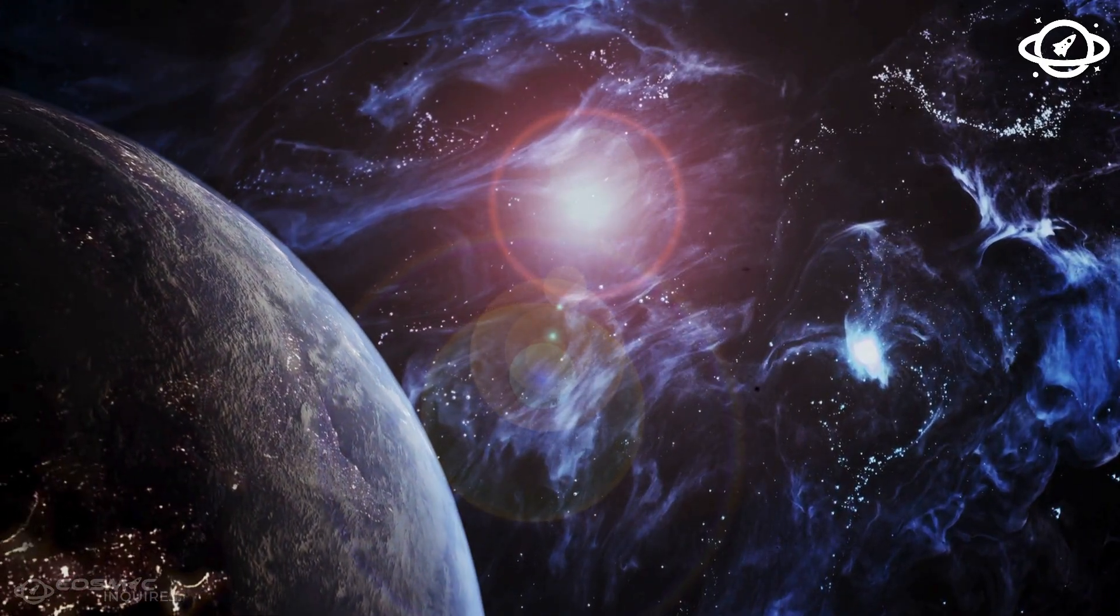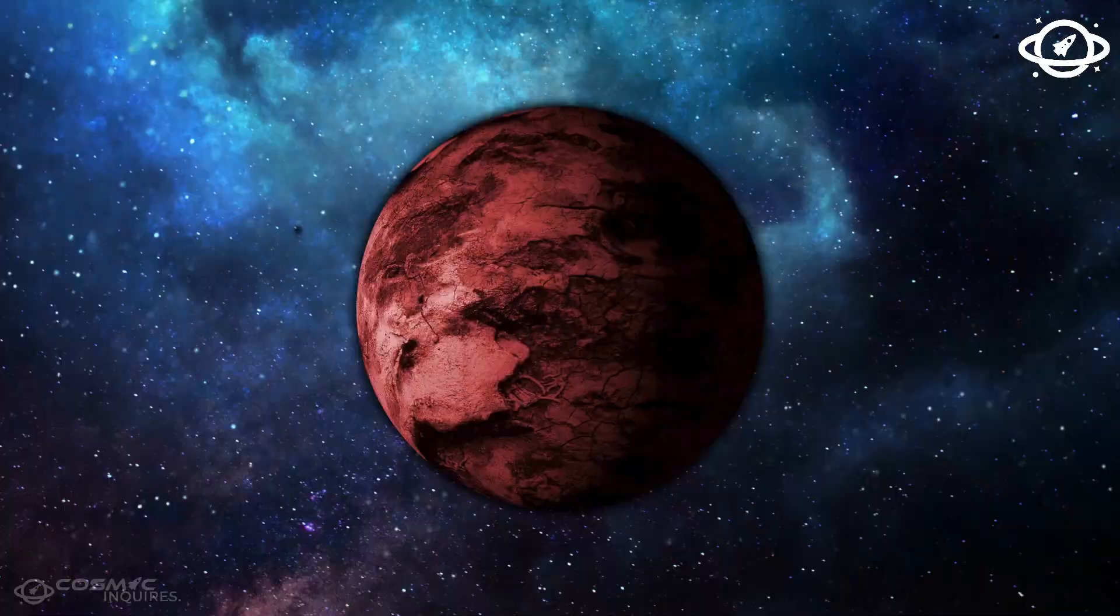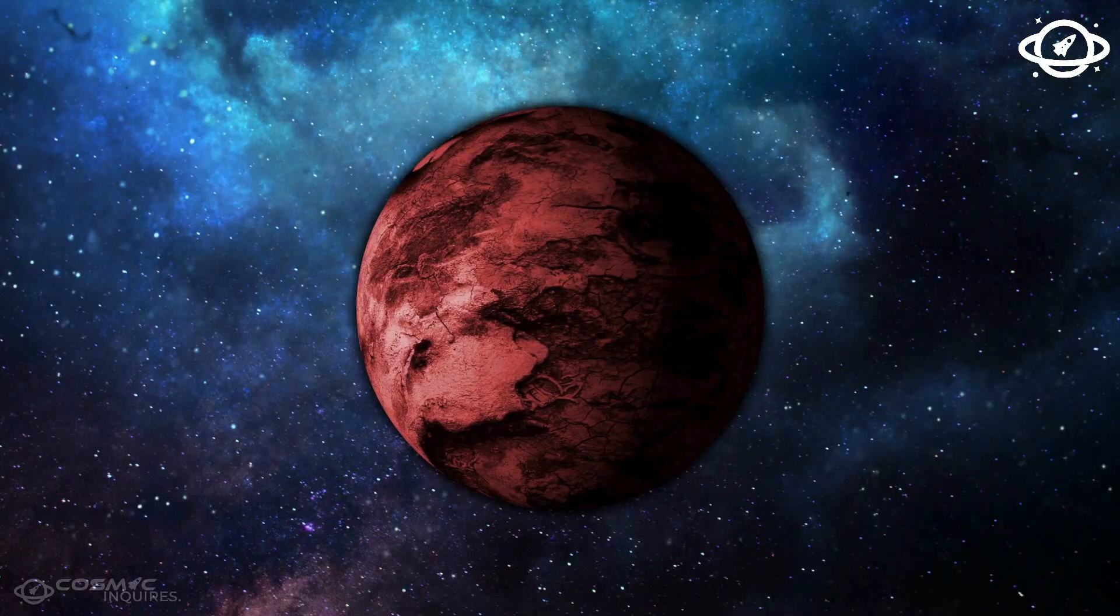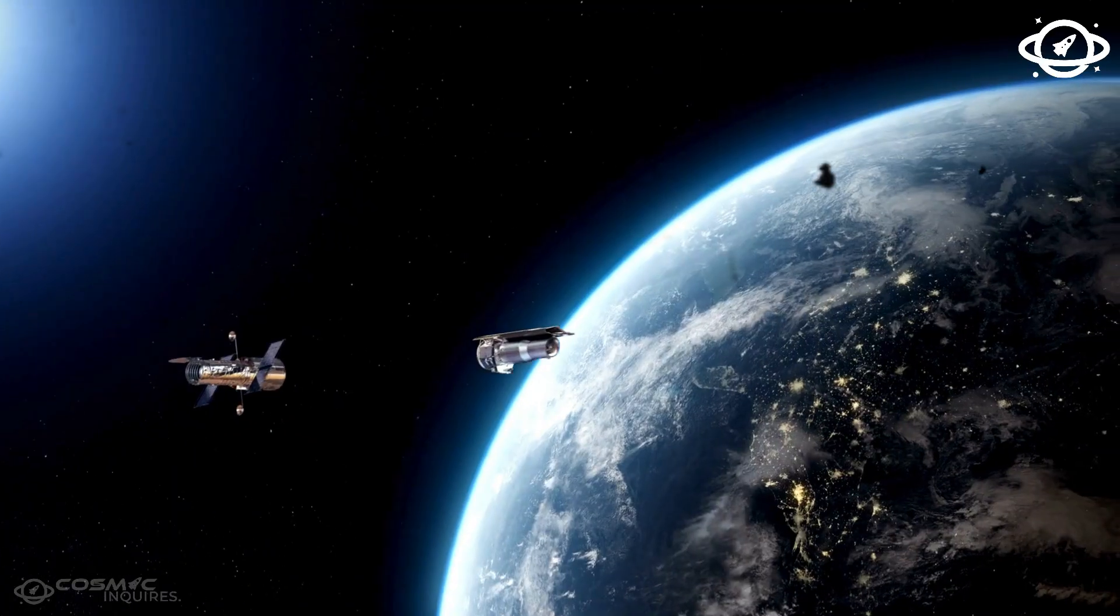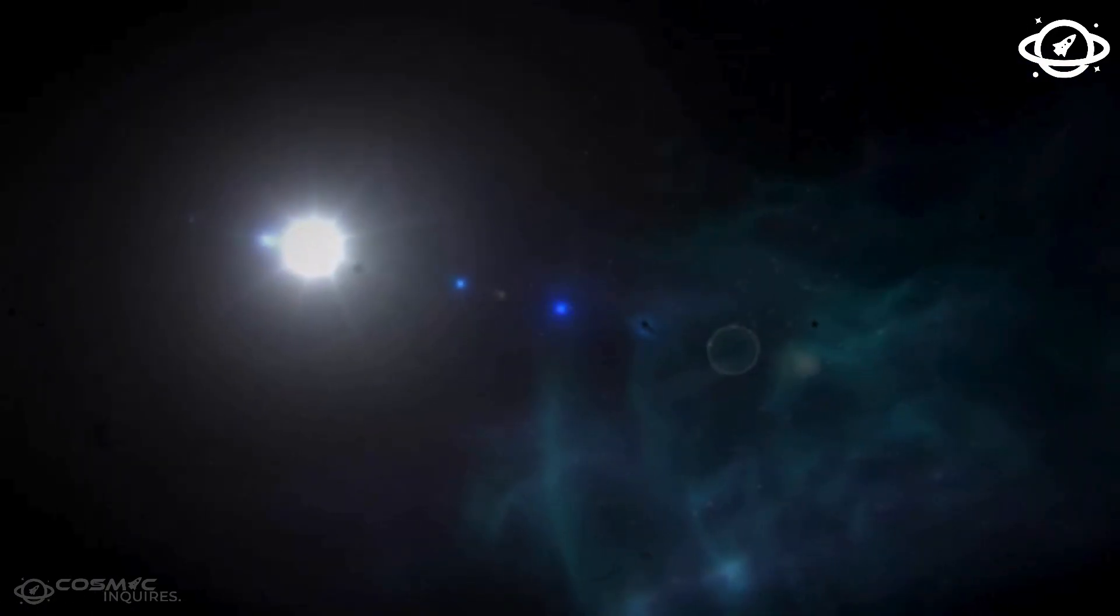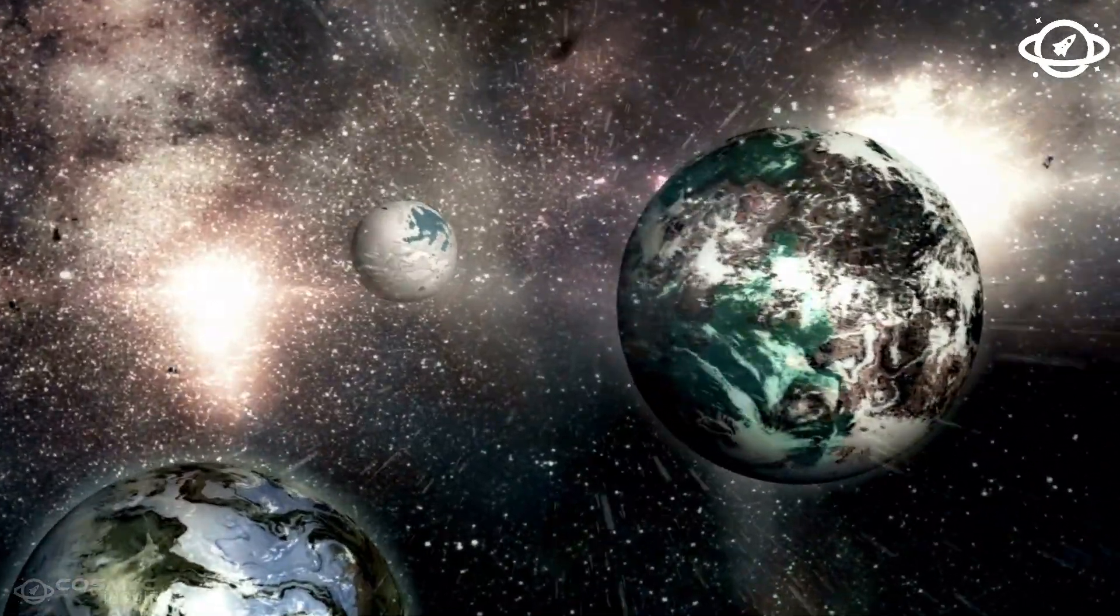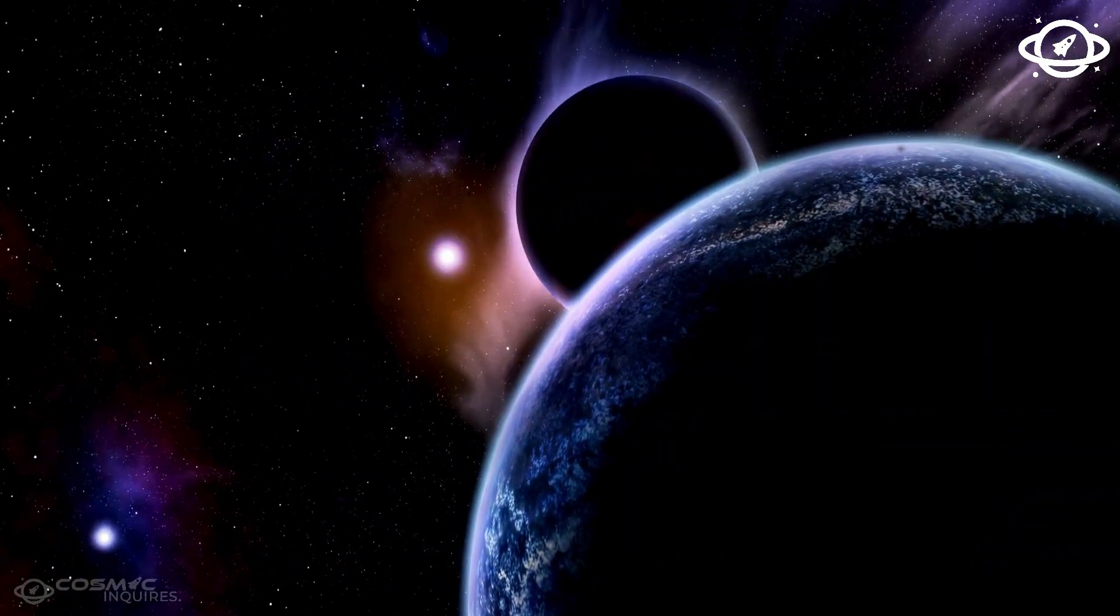For years, astronomers tracked Neptune's orbit with robotic precision, everything aligned, until it didn't. New web data, combined with Earth-based interferometric arrays, revealed anomalies. Neptune's trajectory began to show subtle deviations from Newton's laws. Its path through space, once predictable, now whispered of a deeper, invisible influence.